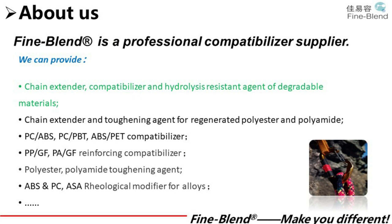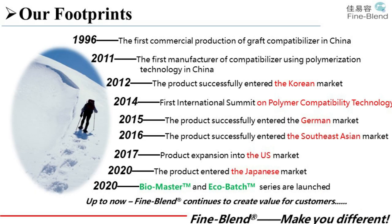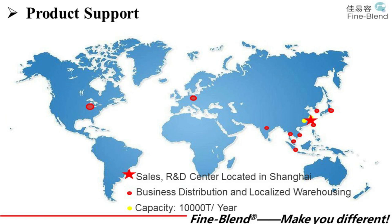Let's take a few minutes to introduce our company. We are a professional compatibilizer supplier providing chain extenders, compatibilizers, and hydrolysis-resistant agents for degradable materials. In 1996, we were the first for commercial production of graft compatibilizer in China. Over the past 10 years, our products have successfully entered markets in Korea, Germany, Southeast Asia, the United States, and Japan. In 2020, we launched the Bio Master and Eco Batch series. Shanghai is our sales and R&D center, and the red dots indicate locations where we provide business and localized warehousing services. Thank you for watching.